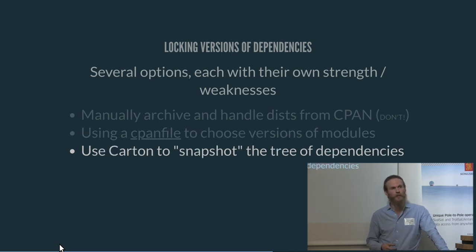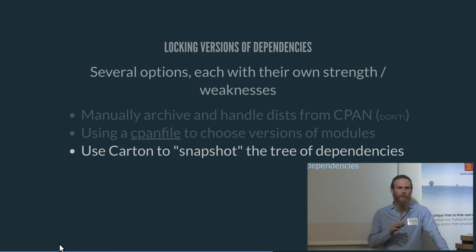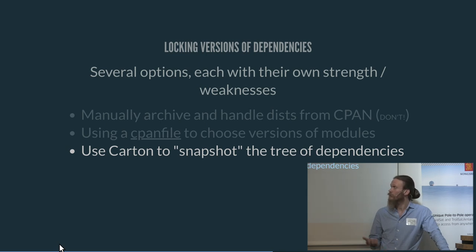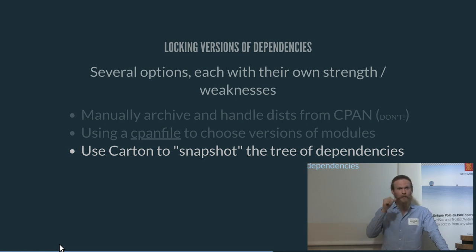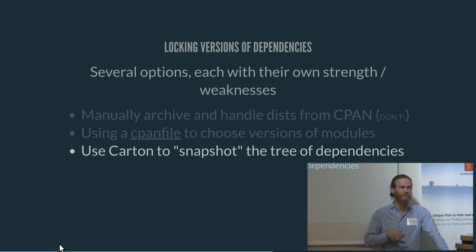Carton is a pretty solid tool and works very well. What Carton does is it reads your CPAN file, installs modules, and records what it's installed in a cpanfile.snapshot. This is similar to what is done in the Node world with the package-lock.json file, and also in the Python world. So that's also a decent approach.